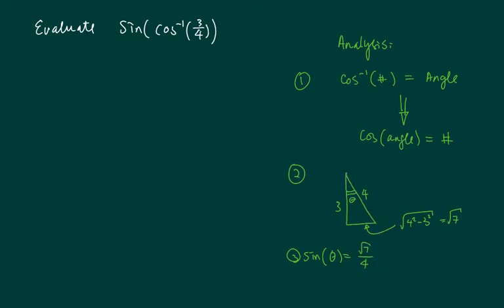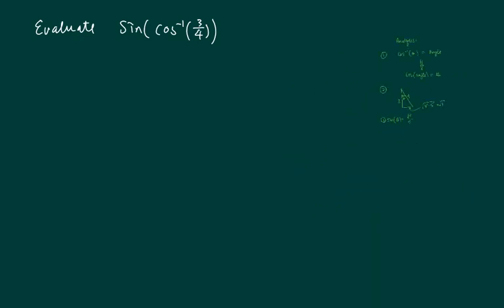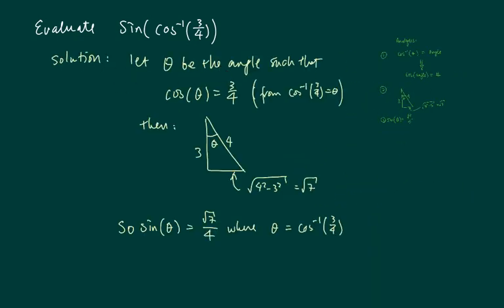Now let's solve this one then. Alright, so here's the solution. Let the angle be such that cosine of theta equals 3 over 4. This I read from the cosine inverse of 3 over 4 is an angle. So you flip this one around and you have cosine of theta equals 3 over 4.